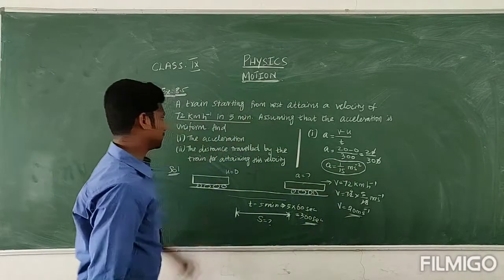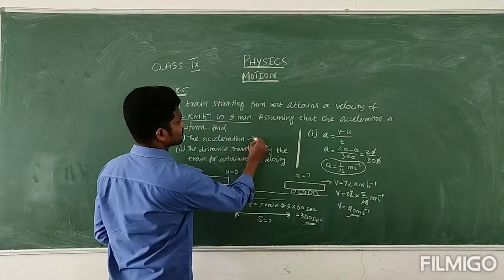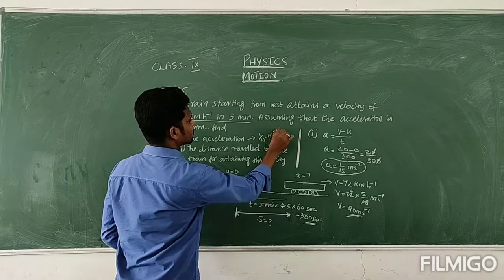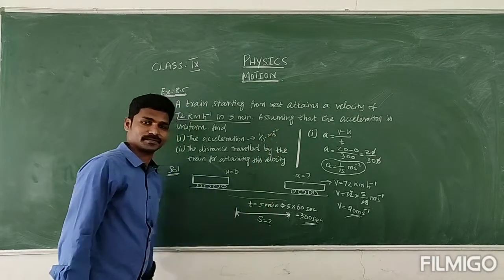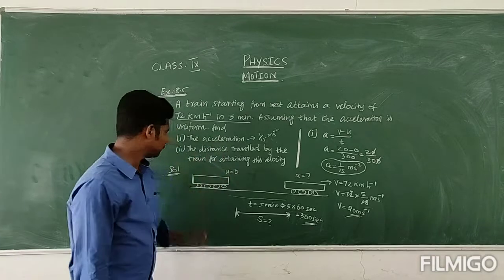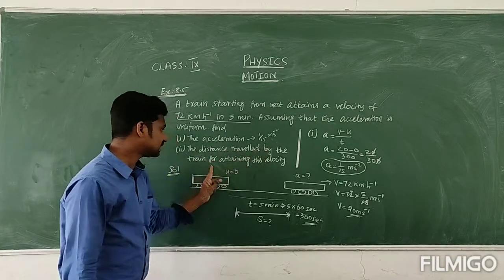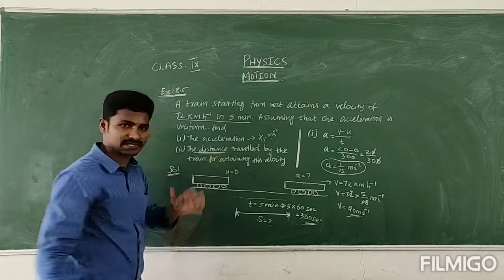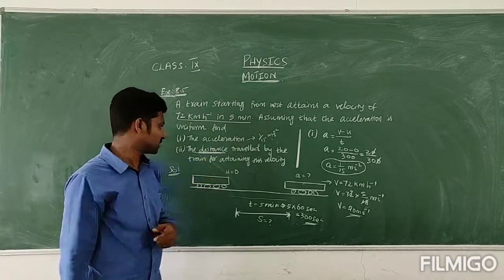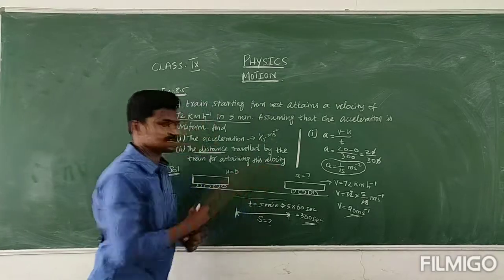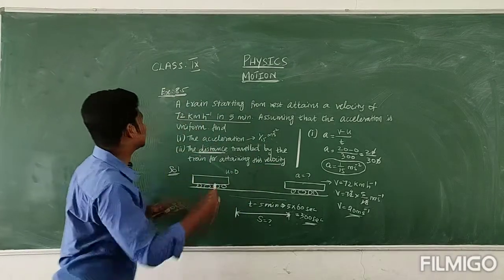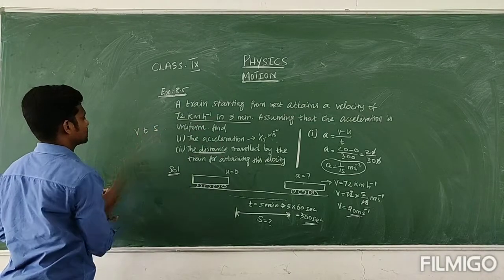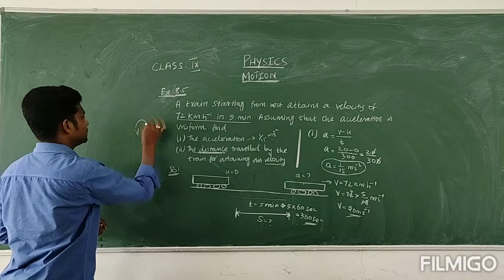So the acceleration is 1/15 metres per second squared — that answers part one. Now see the second one: they are asking the distance travelled by the train for attaining this velocity. Distance travelled means it reaches some position. You need to know the relation between velocity, time, and position. V and t: velocity and time relation — v = u + at. Then t and s relation: s = ut + ½at².